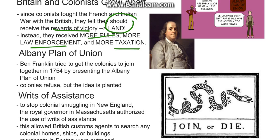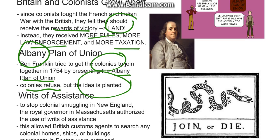Albany Plan of Union. Ben Franklin tried to get the colonies to join together in 1754 by presenting what he called the Albany Plan of Union. It's called the Albany Plan of Union because he met with Native Americans and representatives from the colonies in Albany, New York. The colonies refused to join together, but the idea was still planted.